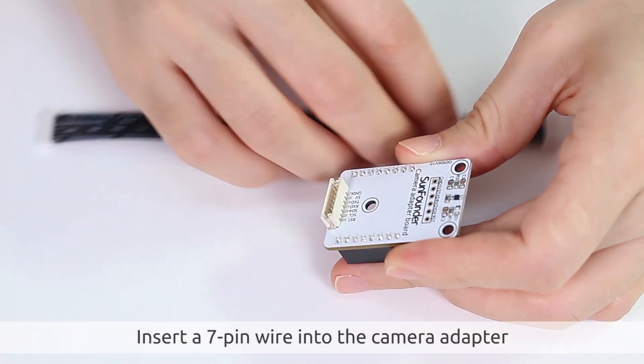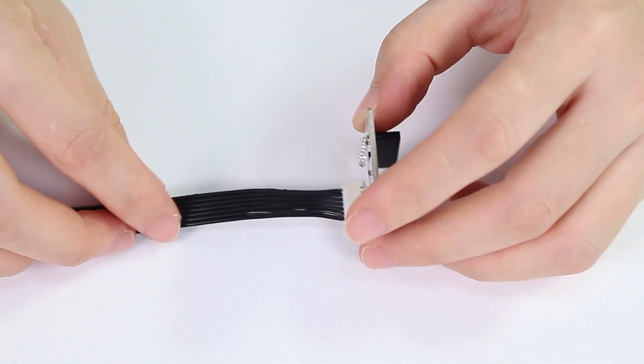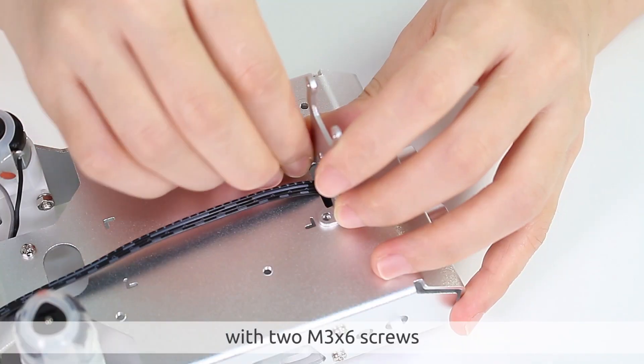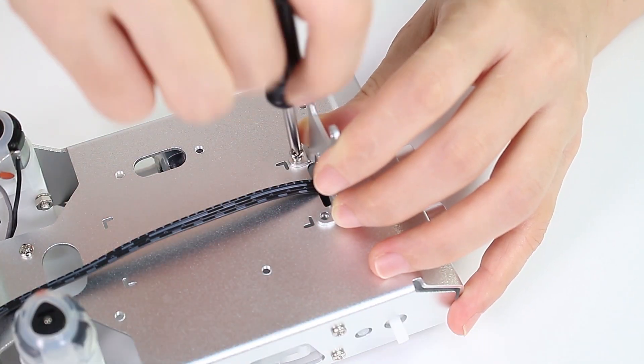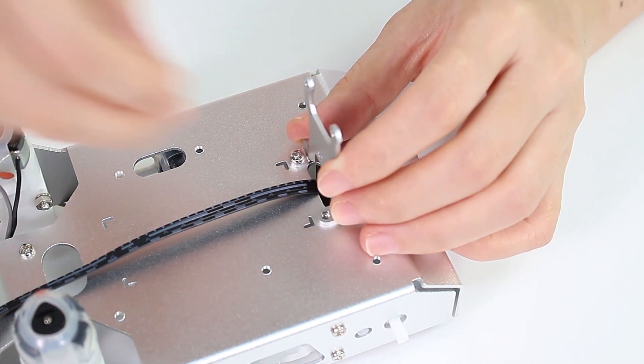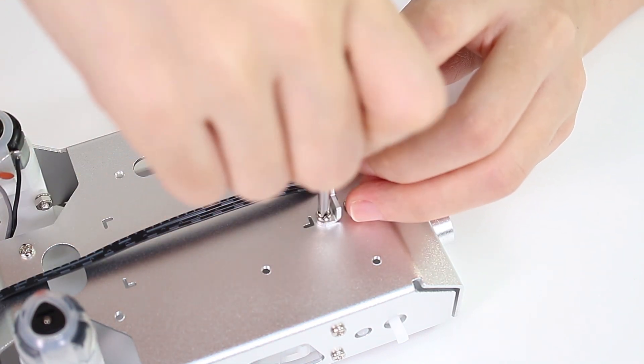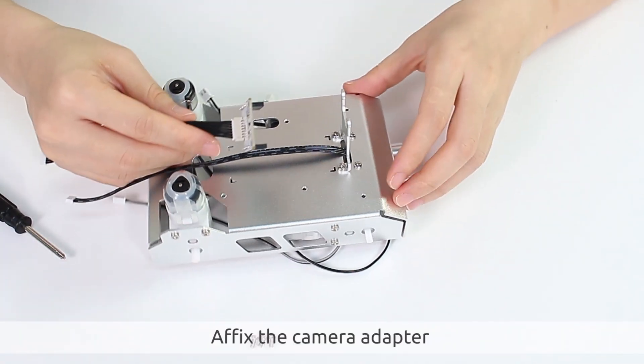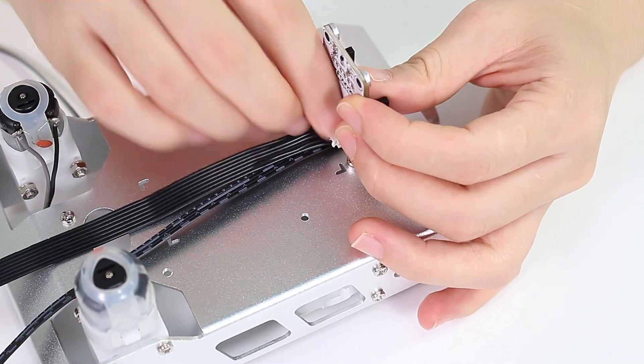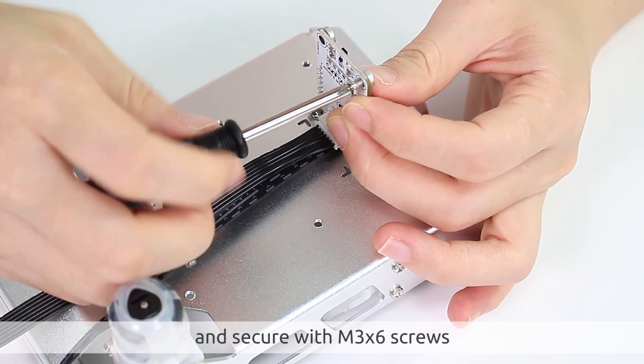Insert a seven-pin wire into the camera adapter. Then attach the camera support plate with M3 x 6 screws. Affix the camera adapter to the camera support plate and secure with M3 x 6 screws.